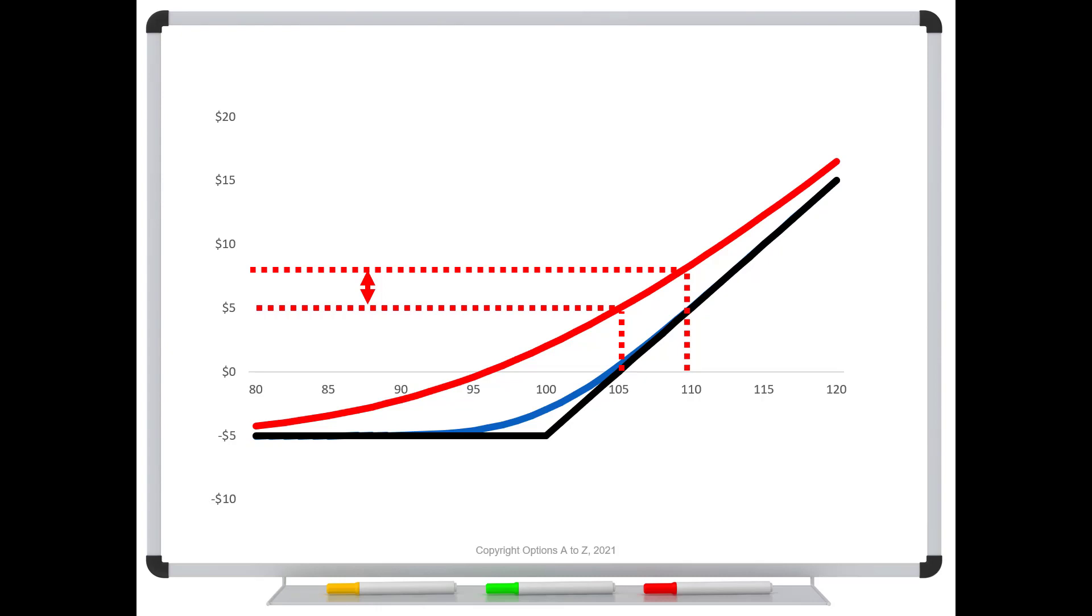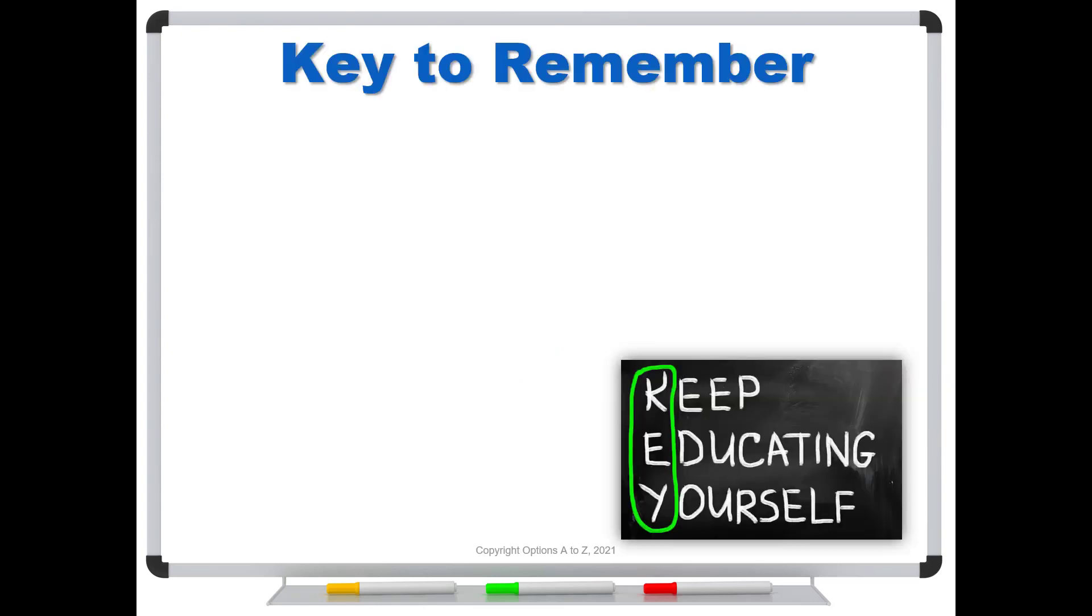So remember that part of the trick is to understand why you're profiting. Because if you're making money but you don't understand why, that's really no different from gambling. So the big key to remember from this video, remember that all of your Greeks constantly change. We're primarily talking about delta, gamma, theta, vega. As time passes at a minimum, which we know is going to happen, all of these are going to change.